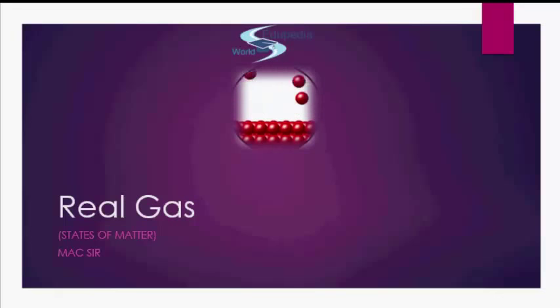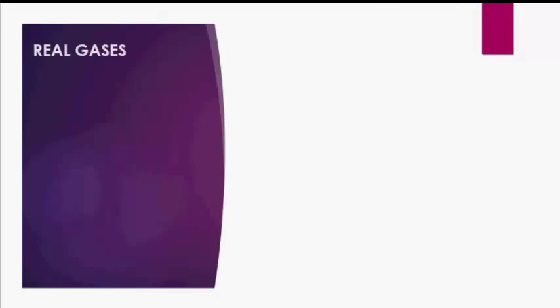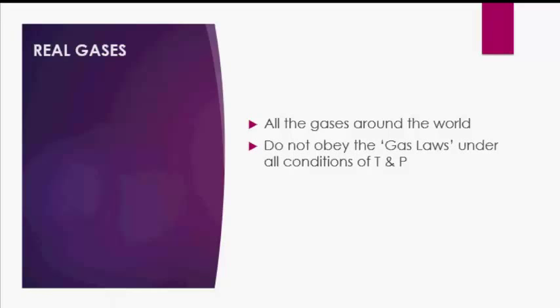Real gases are nothing but all the gases around the world. The ideal gas that we studied doesn't actually exist — it is a theoretical model, a theoretical concept which we devised in order to understand real gases. All the gases around the world, like the air in your room right now containing carbon dioxide, nitrogen, and oxygen, are basically real gases.